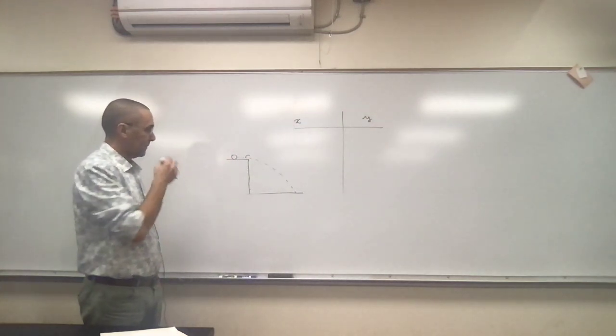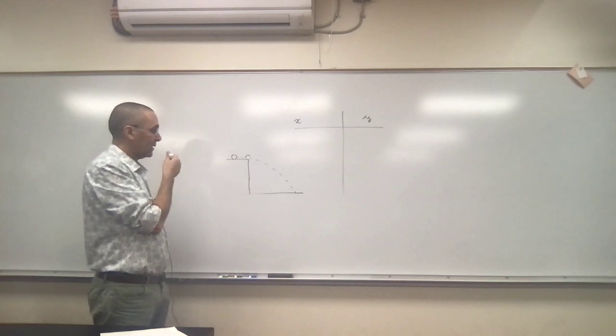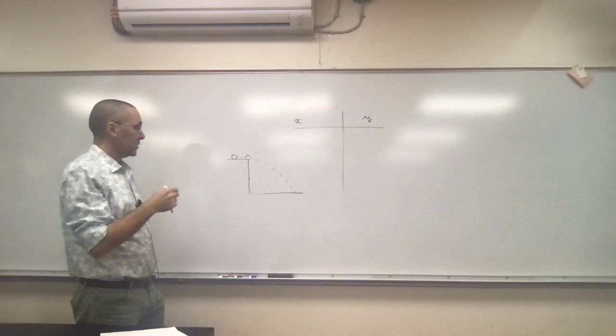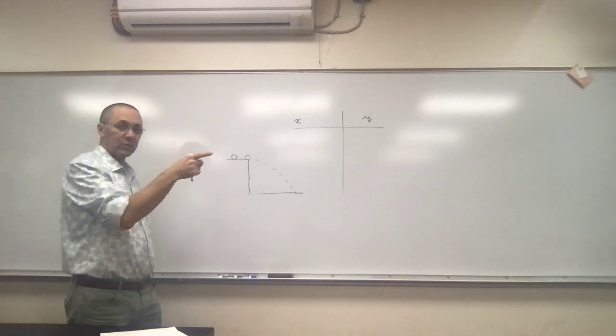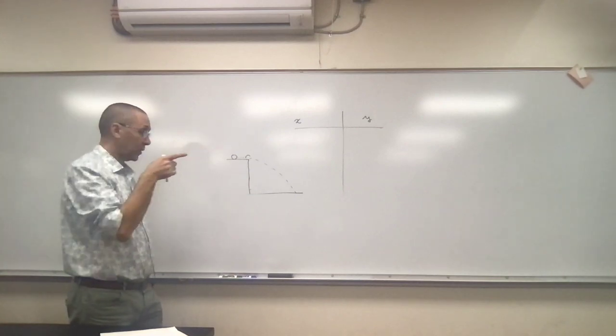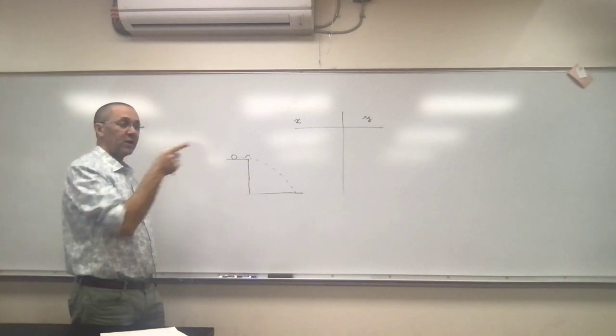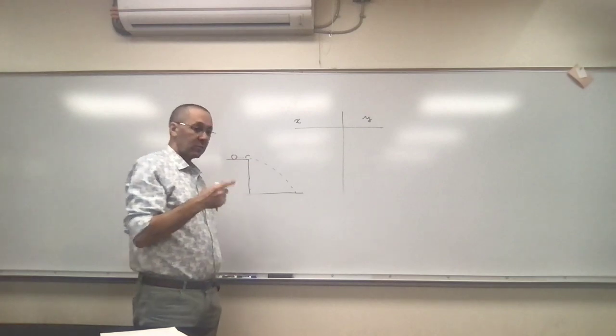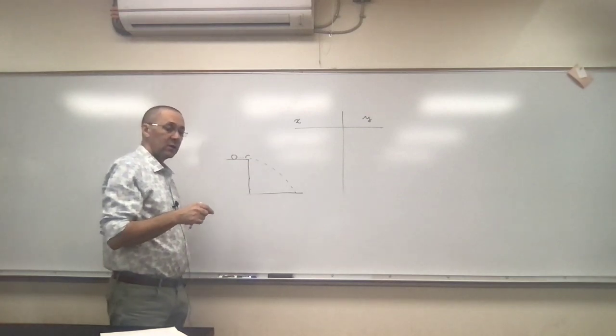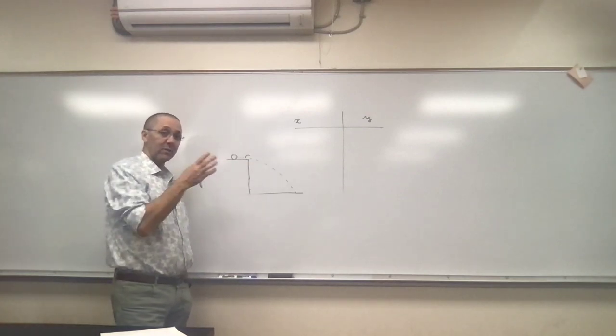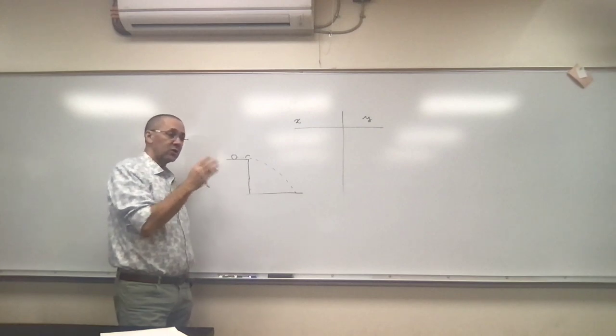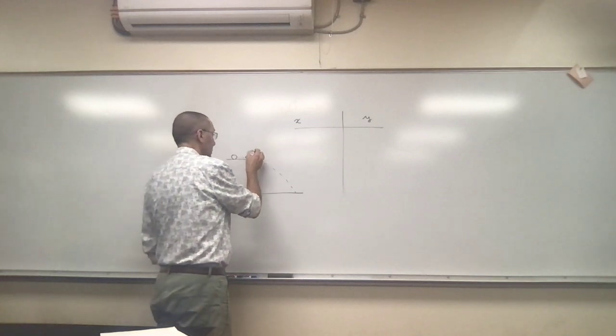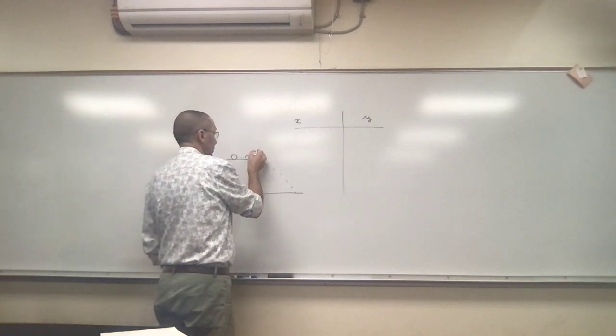In the x direction, if we assume that the only force acting on this while it's in the air is the force of gravity, there are no forces acting on it this way. So if there are no forces acting on it this way, according to Newton's second law, there must be no acceleration. And if there is no acceleration in the horizontal direction, it just means that the velocity should stay constant.